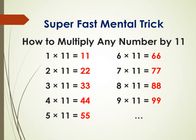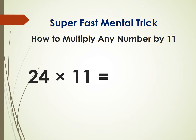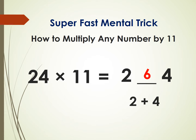Just repeat 3 twice, so it becomes 33. For 9 it is 99. For two-digit numbers, let's take a look at this example: 24 times 11. Just write the first and last digit, 2 and 4, and provide a space for one more digit. Now add these two digits — 2 and 4, you get 6 — so write 6. 264 is the answer.